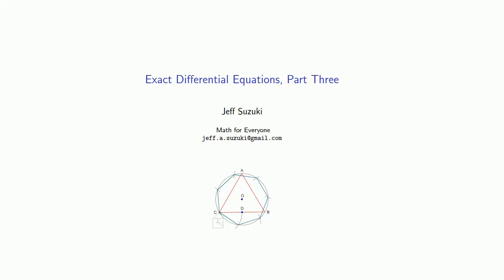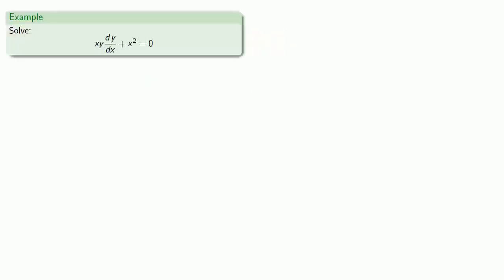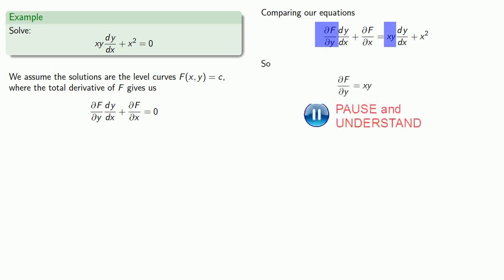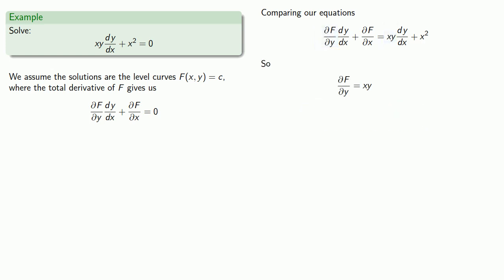Solving exact differential equations seems to be pretty easy. We might try to solve this differential equation, and as before, we assume the solutions are level curves f(x, y) equals c, where the total derivative of f has this form. Comparing our two equations tells us the partial derivative of f with respect to y has to be xy, and the partial derivative of f with respect to x must be x squared.